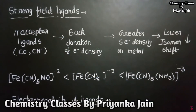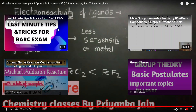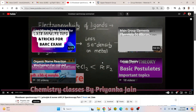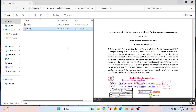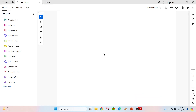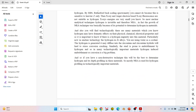Another factor affecting the isomer shift is the nature of the ligand. This concludes the discussion on the isomer shift and the basic principles of Mössbauer spectroscopy. We now know the basic principles of Mössbauer spectroscopy and how to use it.